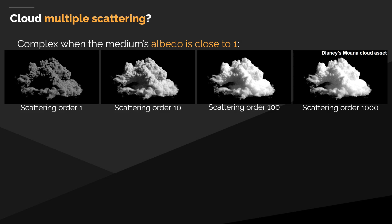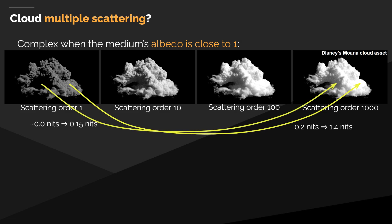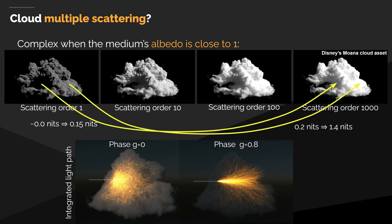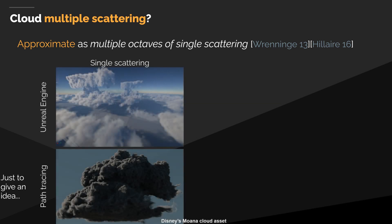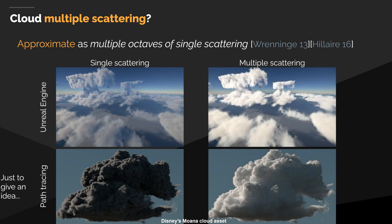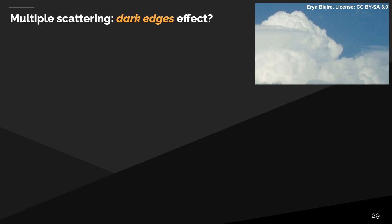Clouds are rendered using ray-marching, but evaluating multiple scattering contribution is challenging, as this phenomenon really defines the distinctive appearance of a cloud. Without multiple scattering, a huge part of the energy is lost because the participating medium albedo is usually very close to 1, meaning light is almost never absorbed. We settled on using the multiple octaves of single scattering approach proposed by Wrennge. You can see single scattering only versus two octaves: the light penetrates deeper into the medium, achieving a brighter and more cloud-like appearance. However, this is not true multiple scattering simulation, and as such lacks other defining visual features such as dark edges — the result of low probability of light scattering toward the eyes in those regions.